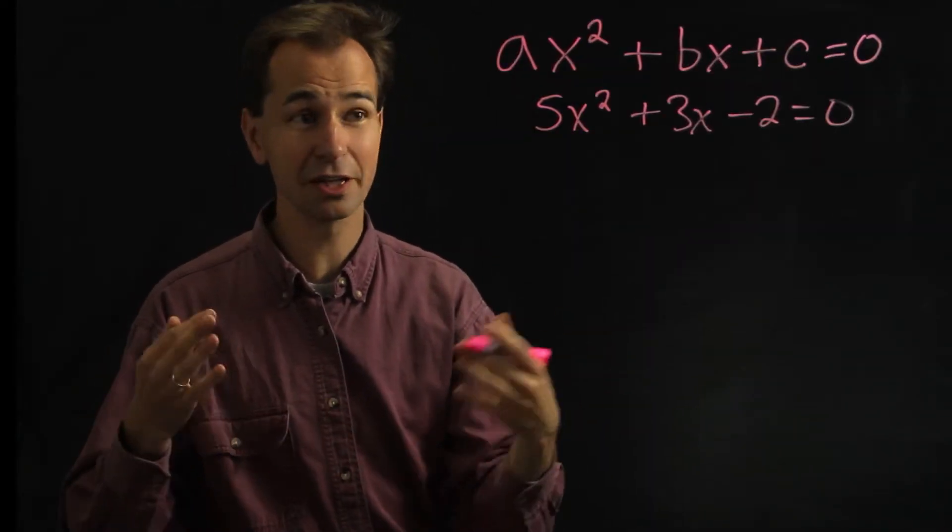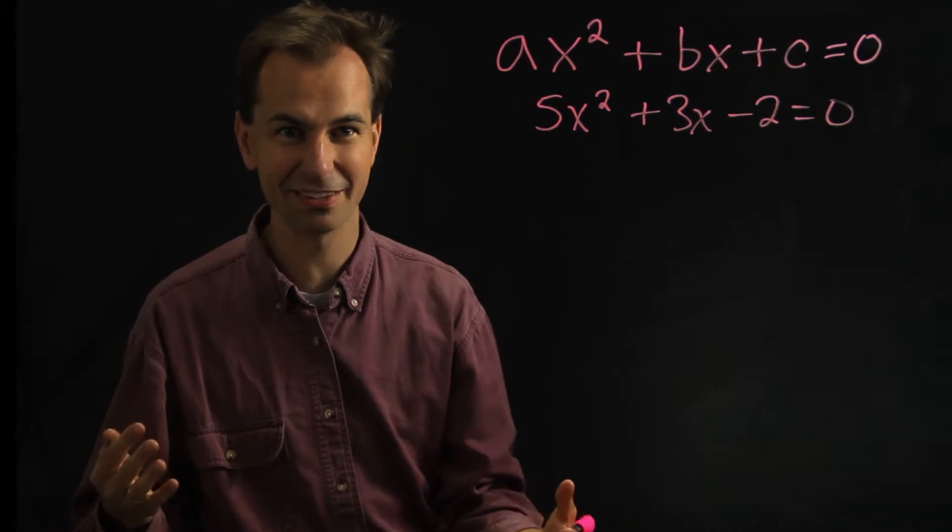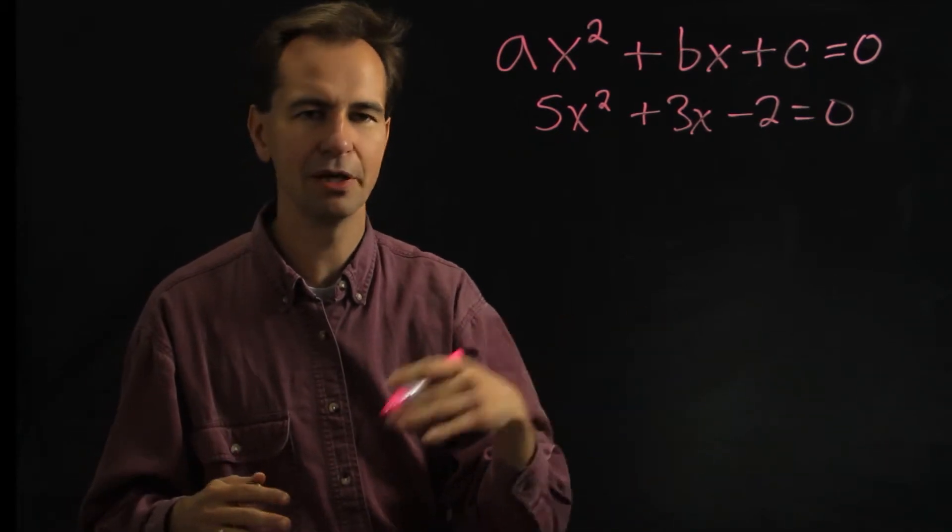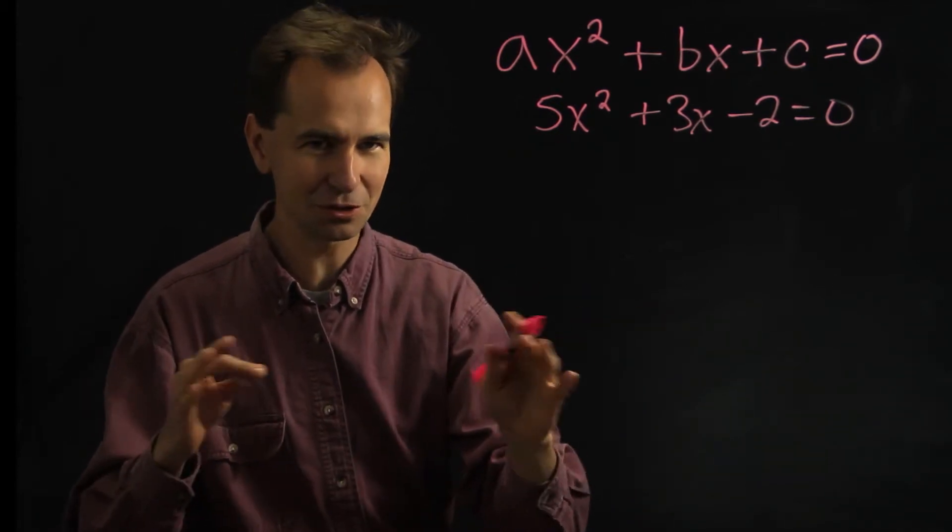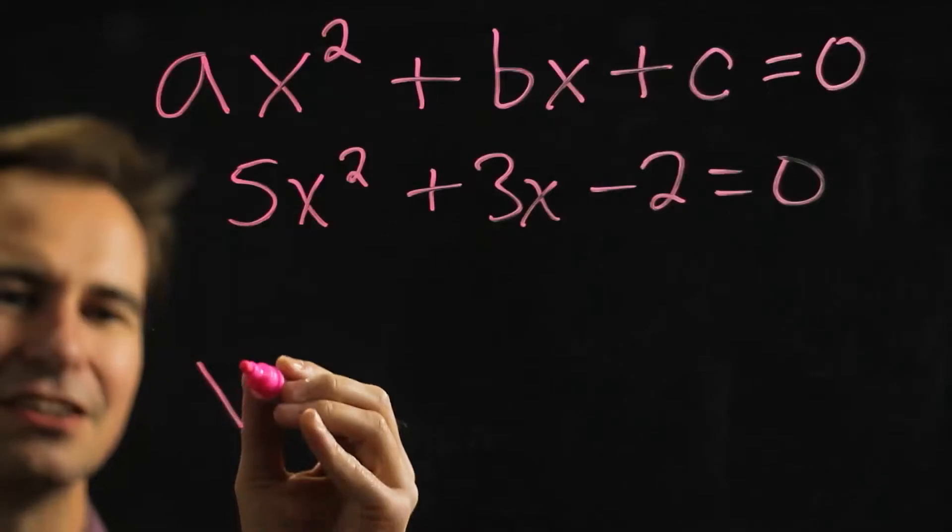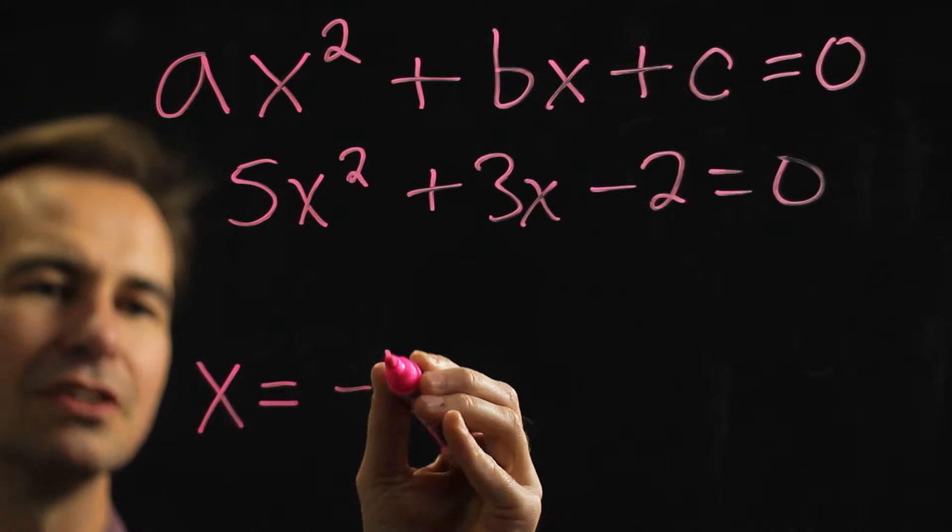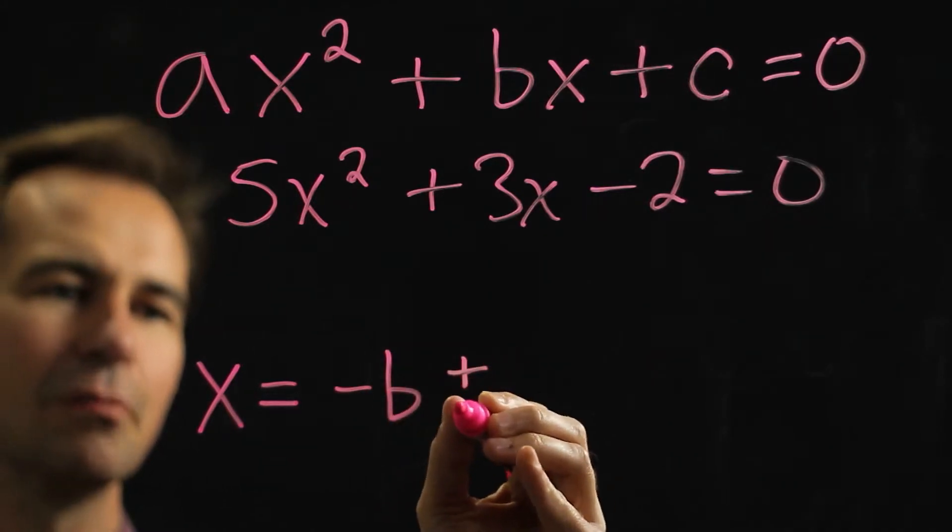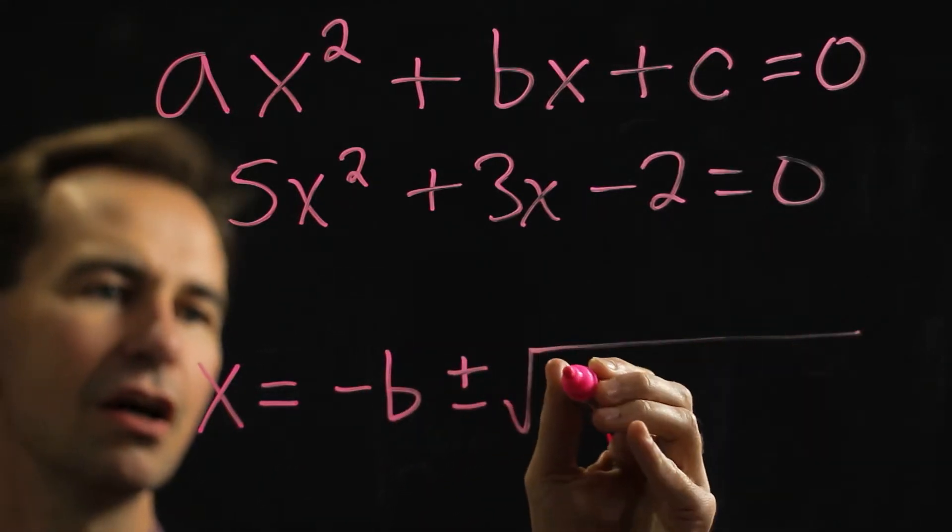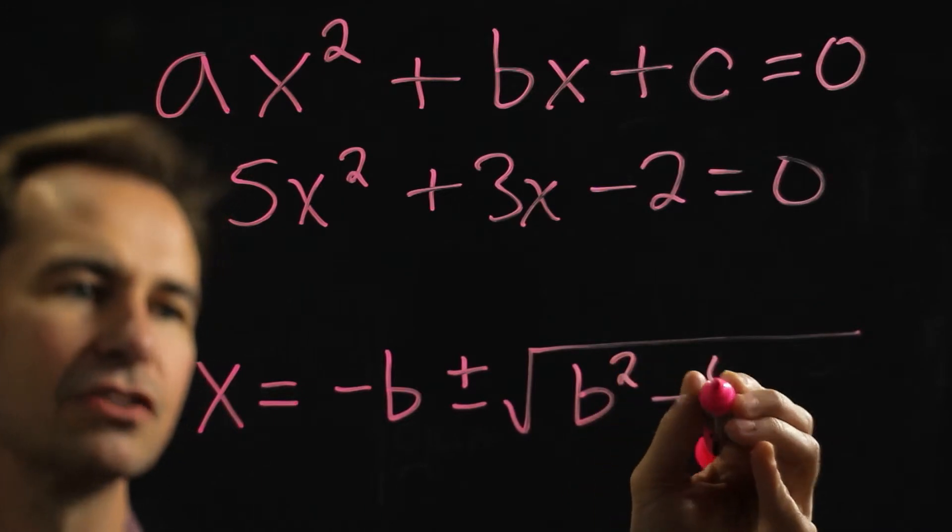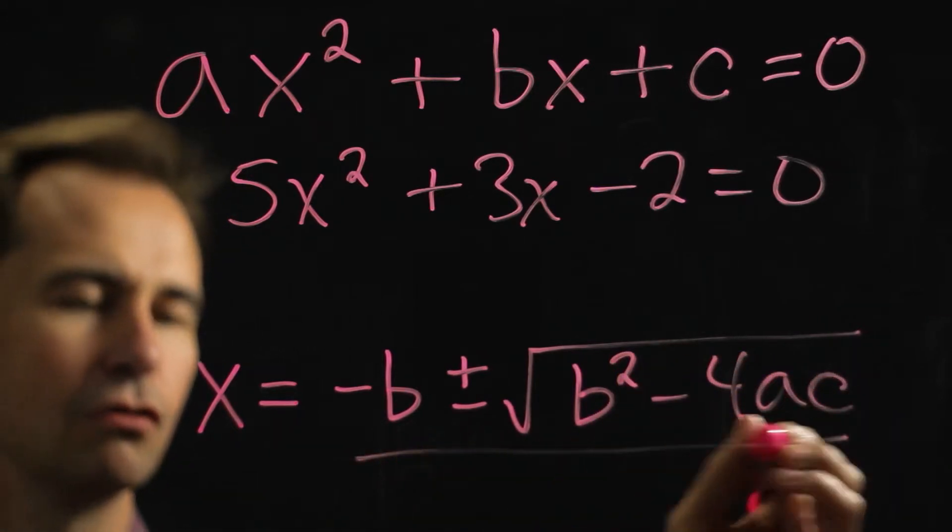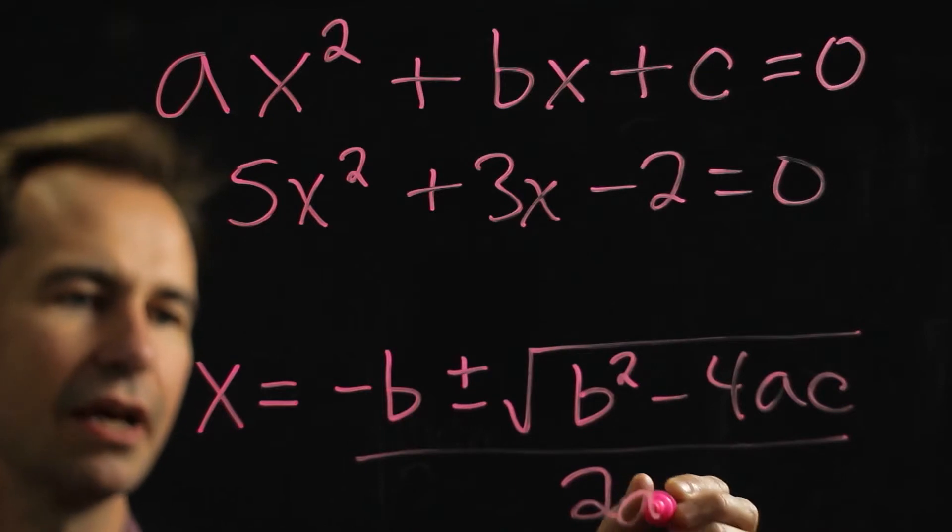The cool thing is, you can actually figure this out using a method called completing the squares, but we won't go into that. The result of that is that it turns out that the solution is x equals negative b plus or minus the square root of b squared minus 4ac all over 2 times a.